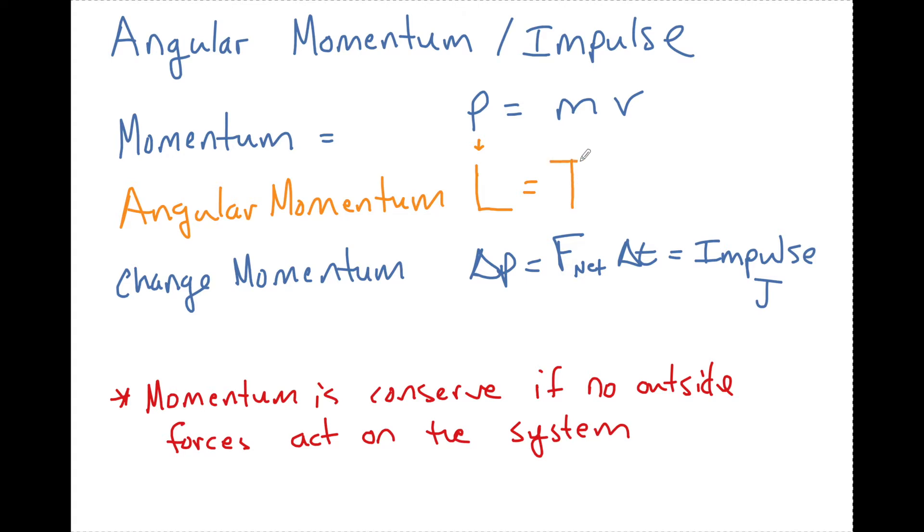Now remember, you do not need to memorize capital I for certain things. I'm going to give it to you as long as you remember the basic one for a single particle, which is MR squared. But for any other thing, a disk, a rod, a sphere, I'm going to tell you what this I is. There's also going to be another way that we can solve for that.